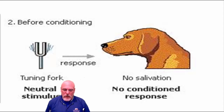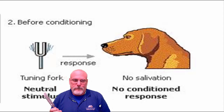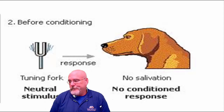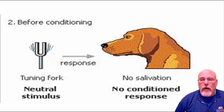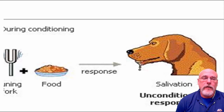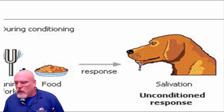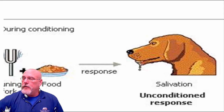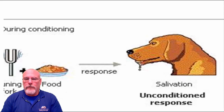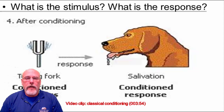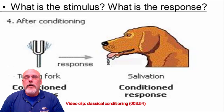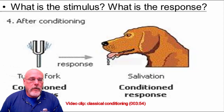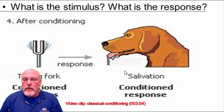Before conditioning, a dog would normally hear a noise like a tuning fork or a bell and not really care — maybe get its attention, but not do much. Now, what Pavlov did is every time he served his dog food, he would also ring a bell. He continued to do that over and over again. Over time, the dog started to salivate just by hearing the bell — it didn't need to see or smell the food anymore. The dog learned that the bell would be associated with food. So he was conditioned to have a new stimulus: the bell ringing, with the response being salivating.